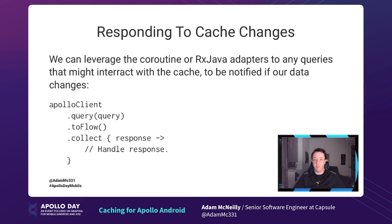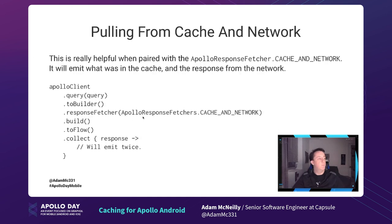We can also respond to cache changes. If we leverage the coroutine or RxJava adapters that Apollo offers, we can take our query and call toFlow() or toFlowable() in RxJava, and then observe multiple changes to our cache without making new queries. This is especially helpful with the ApolloResponseFetchers.CACHE_AND_NETWORK fetcher — if we apply it and convert to a flow and call collect(), it will emit twice: once with information from the cache and once from the network.